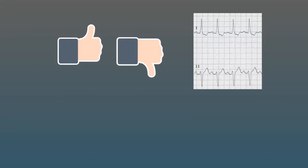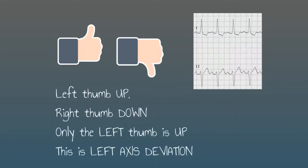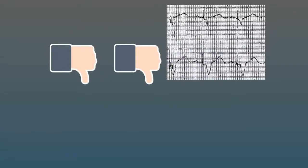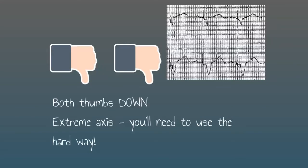In this ECG we look at lead one and see that it's predominantly upwards, so our left thumb goes up, but in lead two it's predominantly downwards so we have a thumb down. Our left thumb remains up - that means it's left axis deviation. So we've worked out how to identify both right axis deviation and left axis deviation. Sometimes you'll see that both lead one and lead two are heading predominantly downwards, with a deep S wave - in which case both thumbs will be down and you can say this is an extreme axis. In this case it's because the patient is paced - you can see pacing spikes before those QRS complexes.